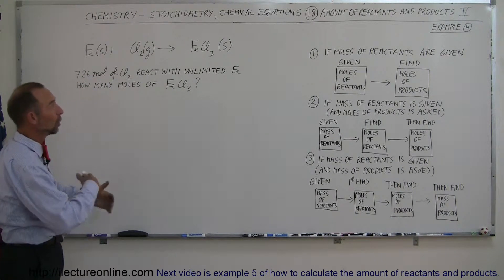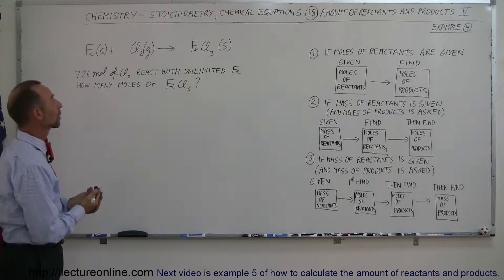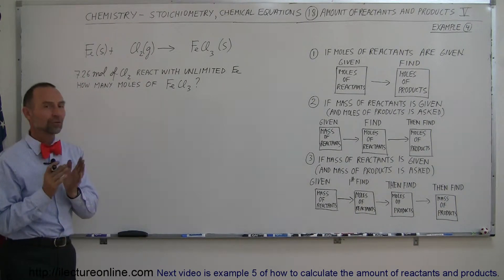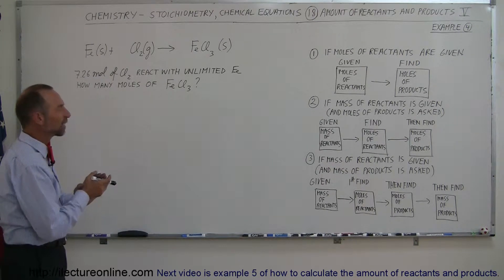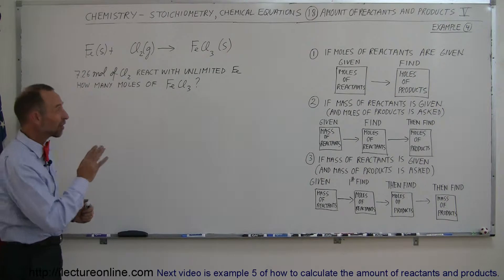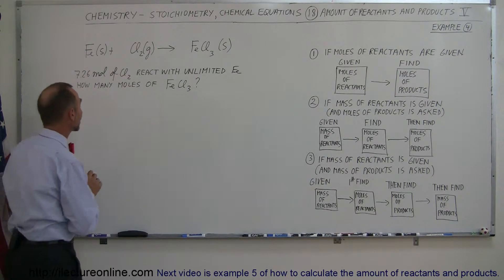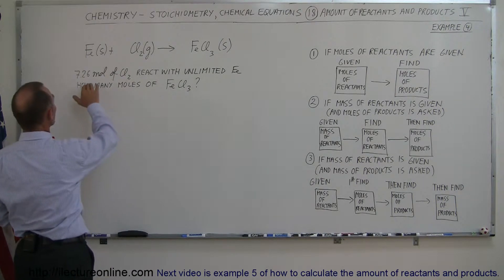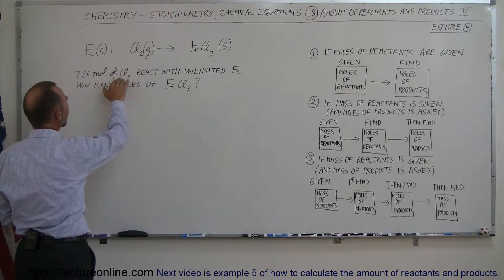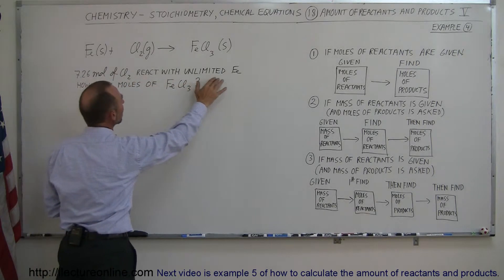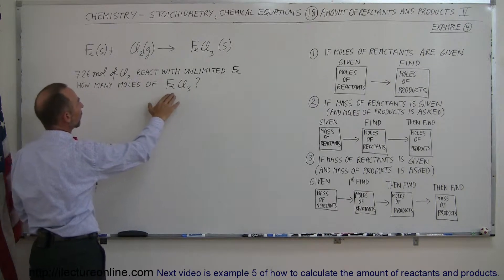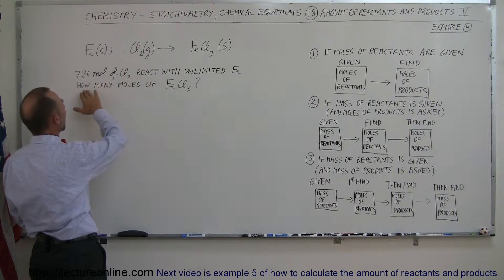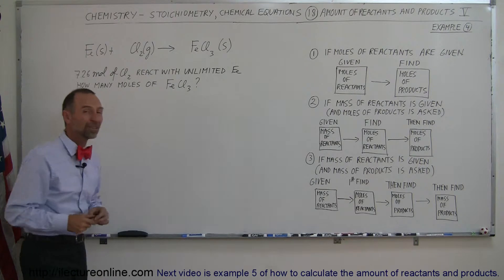Here's another example of how to work with chemical equations. We're going to figure out the amount of products we end up with when we're given the number of reactants. We're given that we started with 7.26 moles of chlorine gas reacting with an unlimited amount of iron, and the result is ferric chloride. The question is: how many moles of that are we going to end up with?